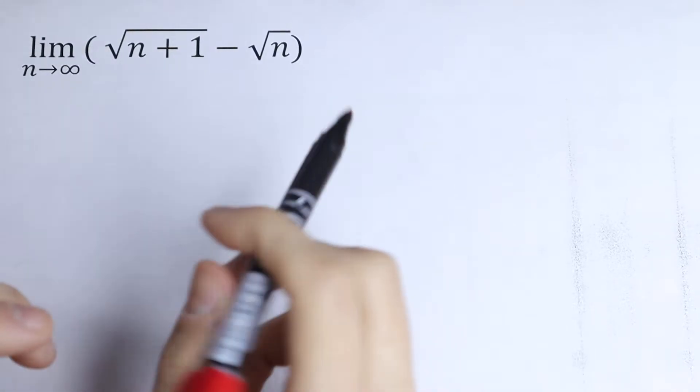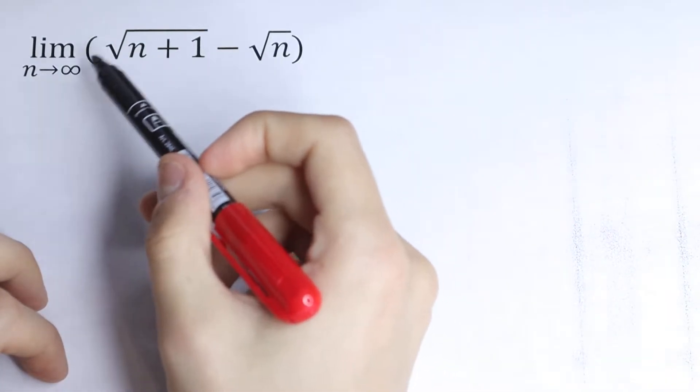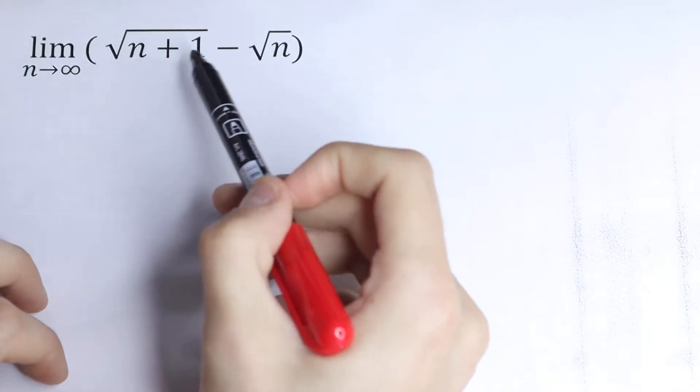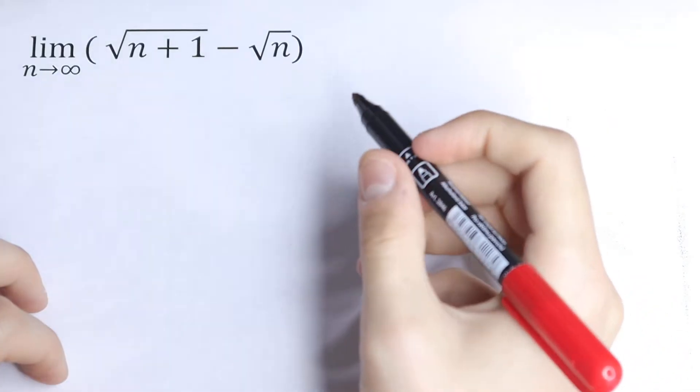Hello everyone, welcome back to higher mathematics. Here we have an interesting limit as n approaches infinity of the function square root of n plus 1 minus square root of n.